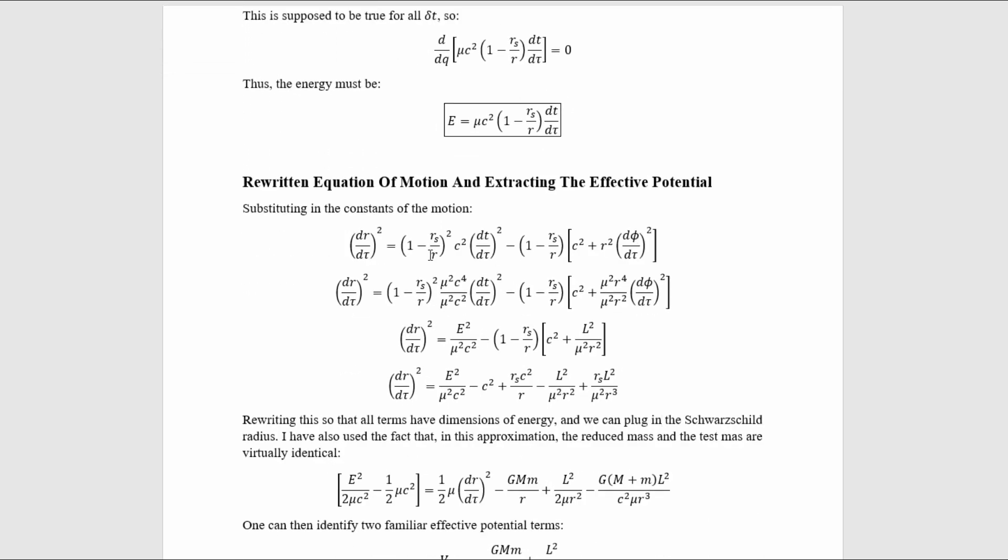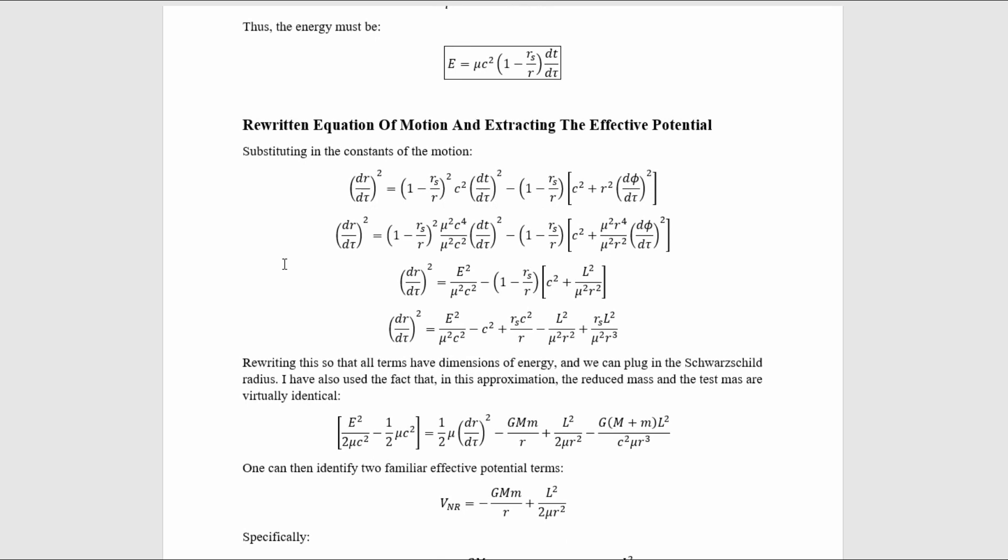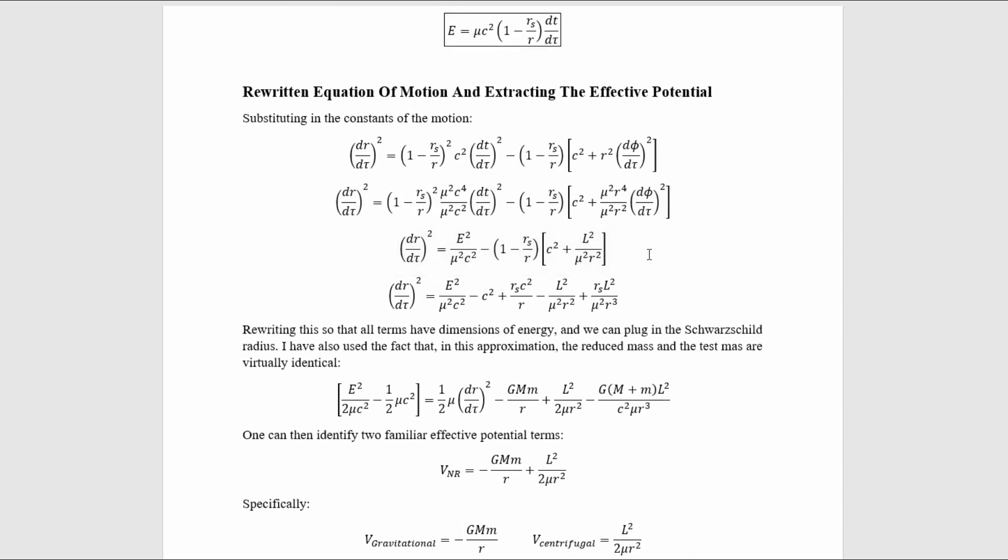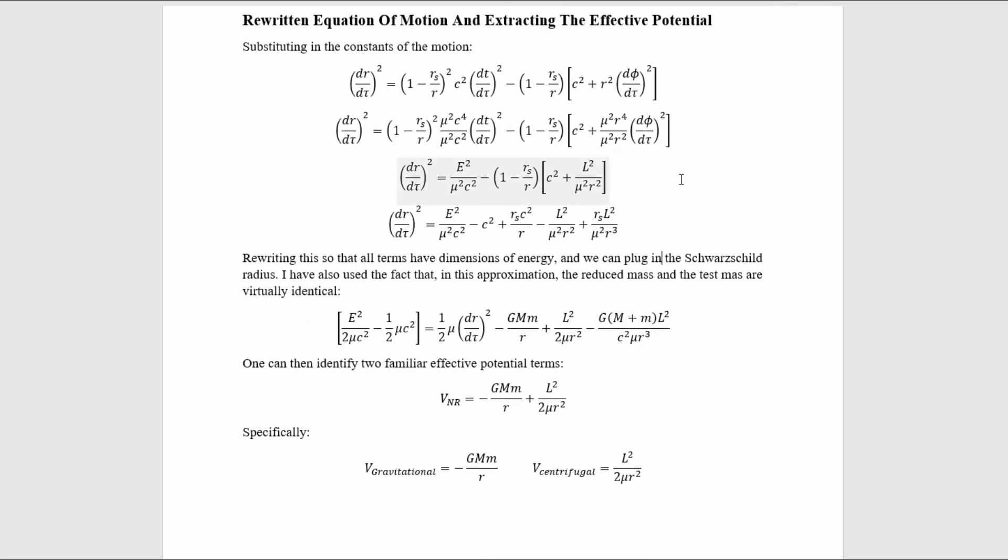Now let's insert these constants of the motion into the radial equation in order to get it written in terms of them. This is the radial equation as we last saw it. I then multiplied and divided by the necessary factors of mu and c and r in order to get the constants of motion formulas to show up there, and then I substituted them in. Then I multiplied this out.